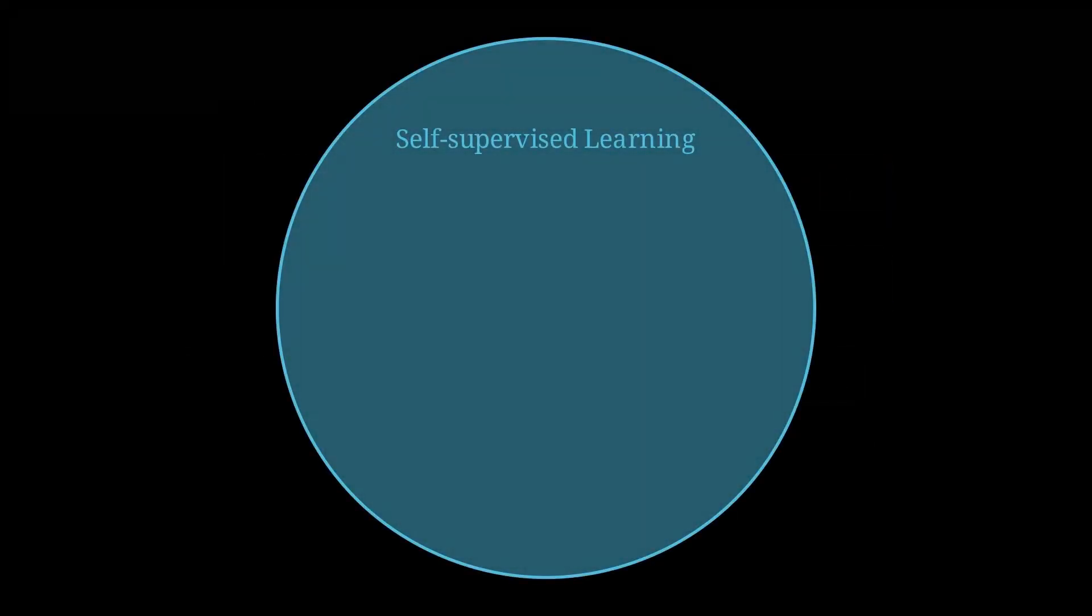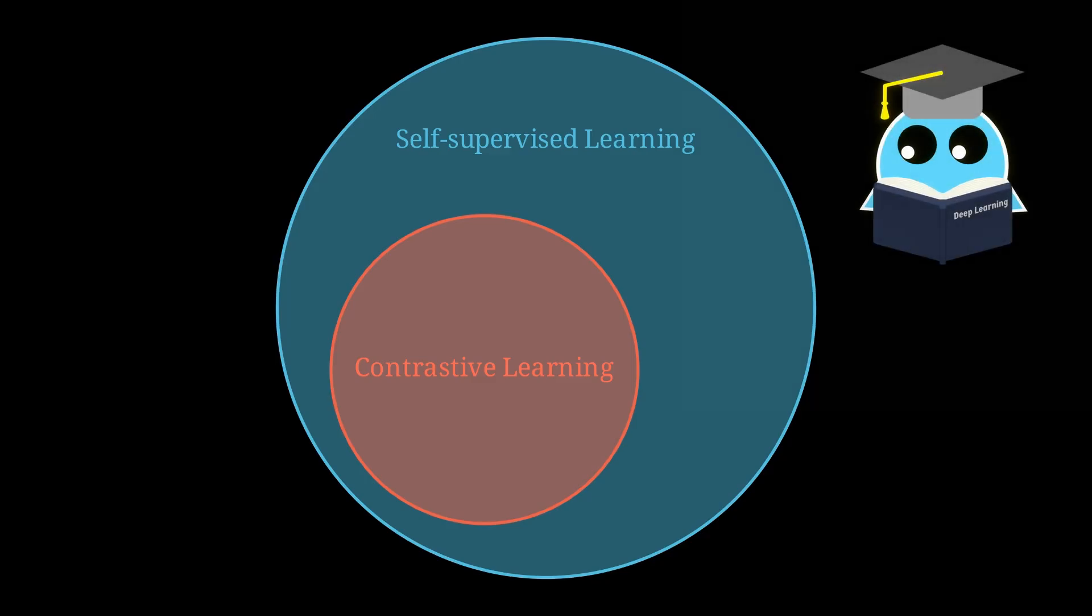Put simply, contrastive learning is a family of self-supervised learning methods that help models learn meaningful representations from data, even when we don't have labels.